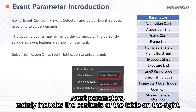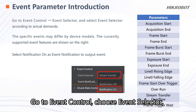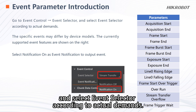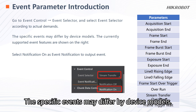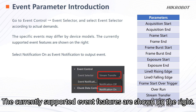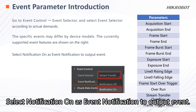Event parameters mainly include the contents of the table on the right. Go to event control and choose events selector according to actual demands — the specific events may differ by device models. The currently supported event features are shown on the right. Select notification on as event notification to output the event.